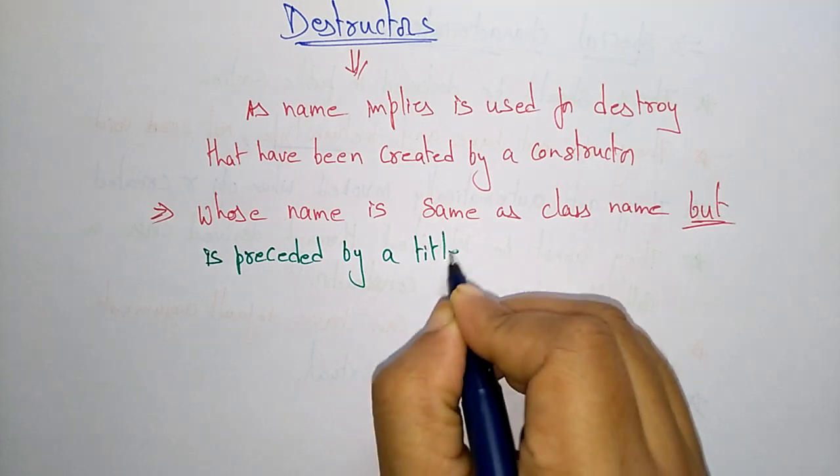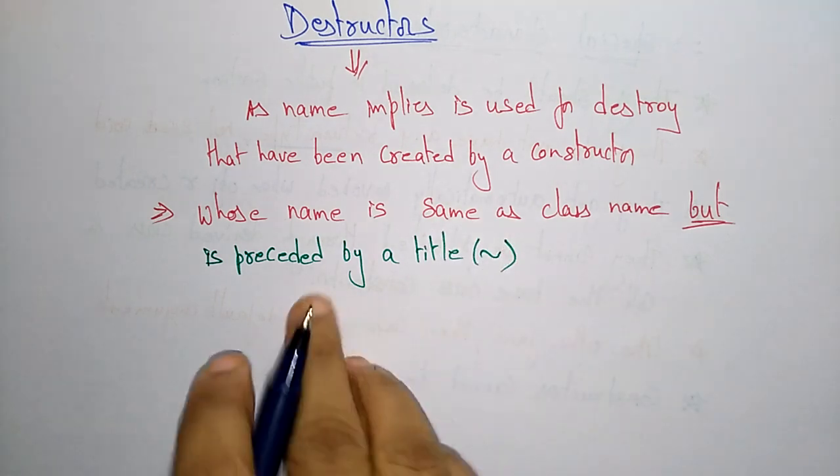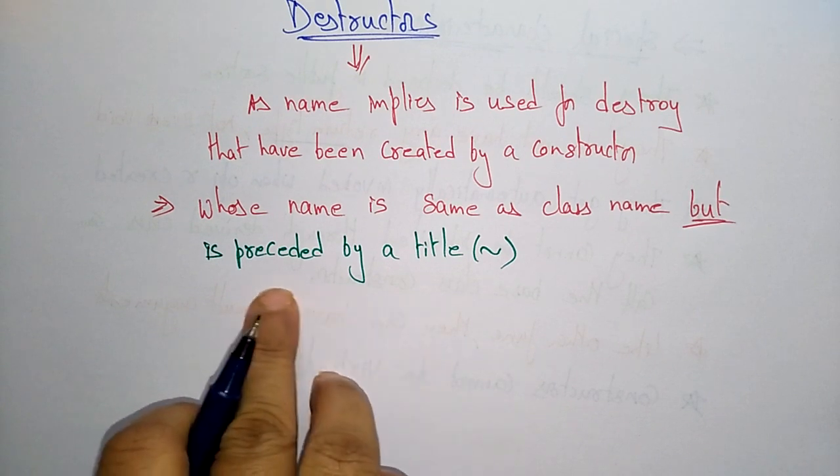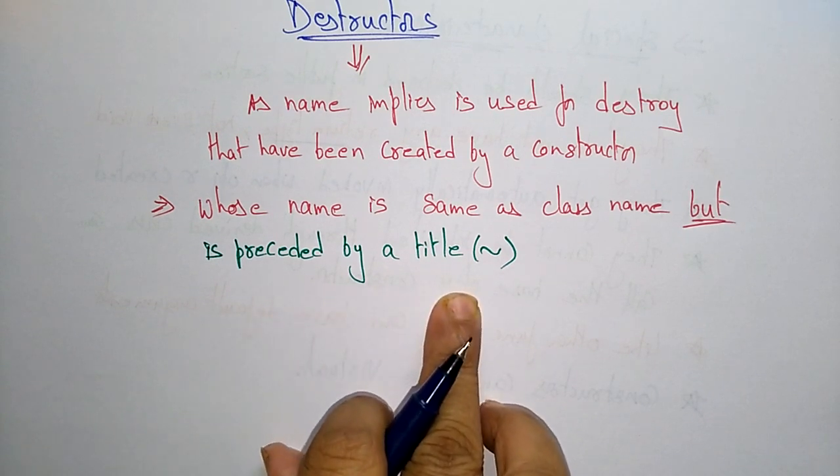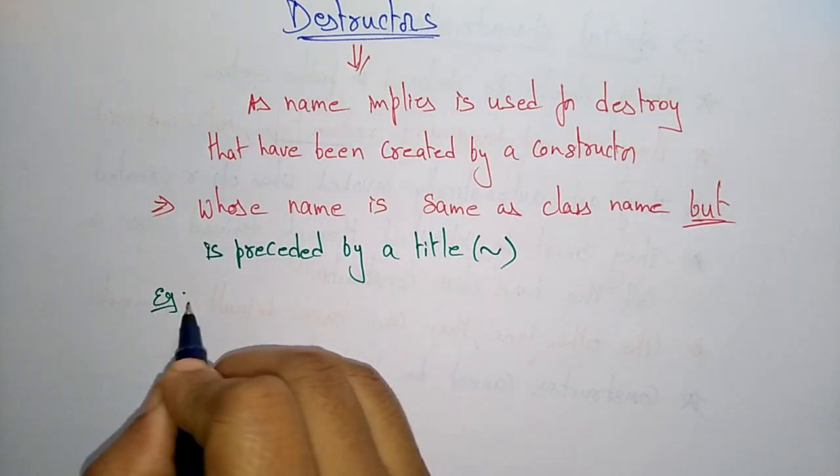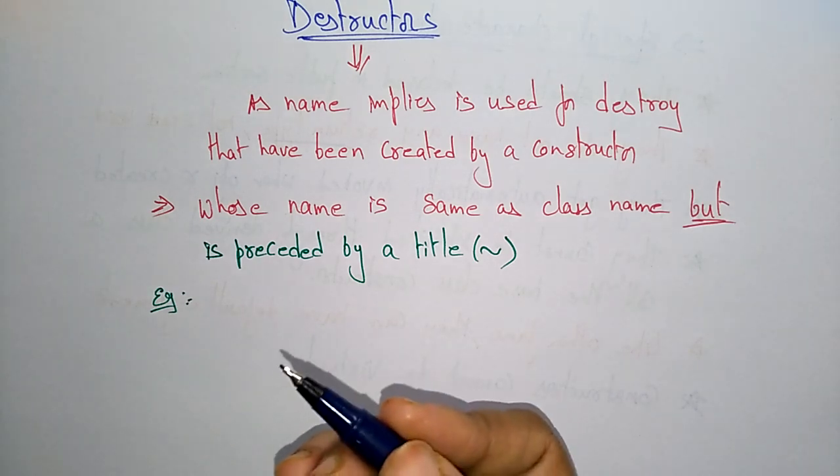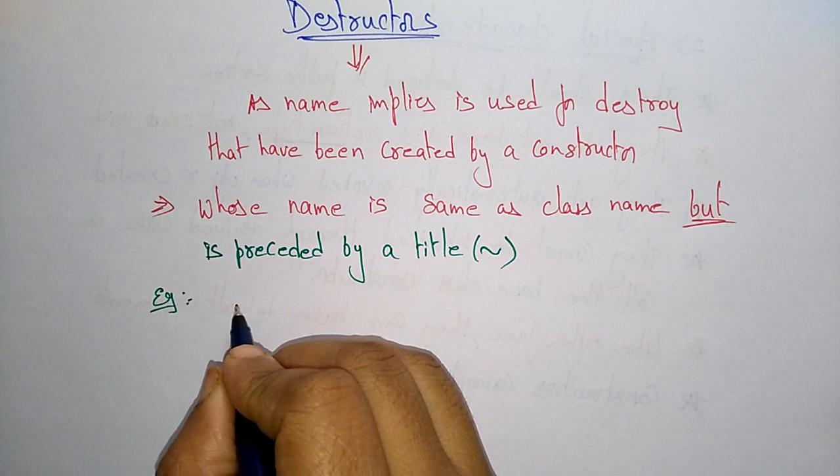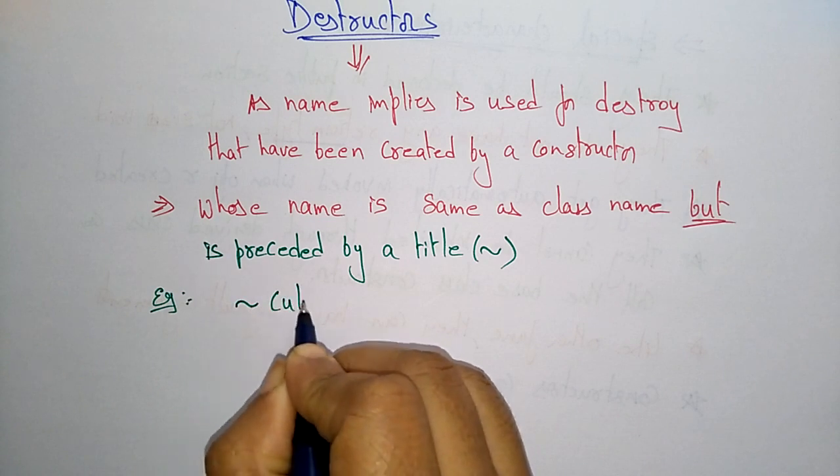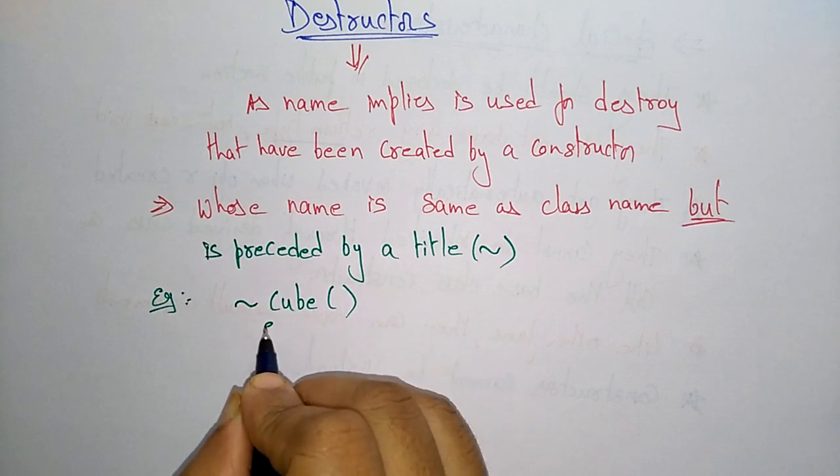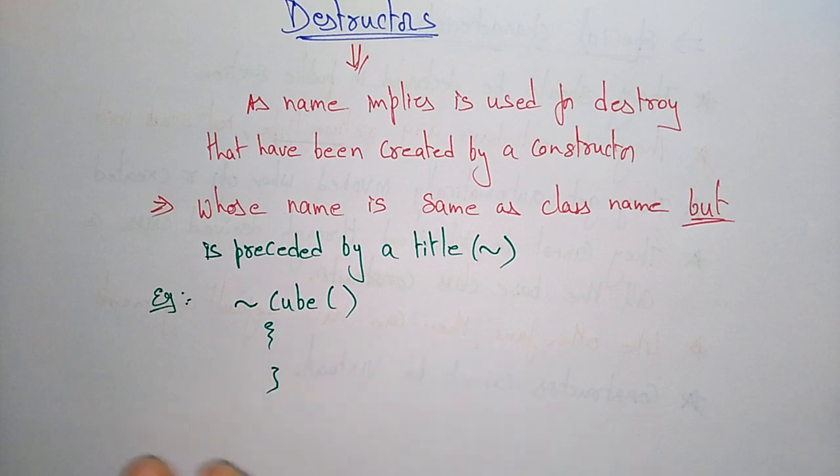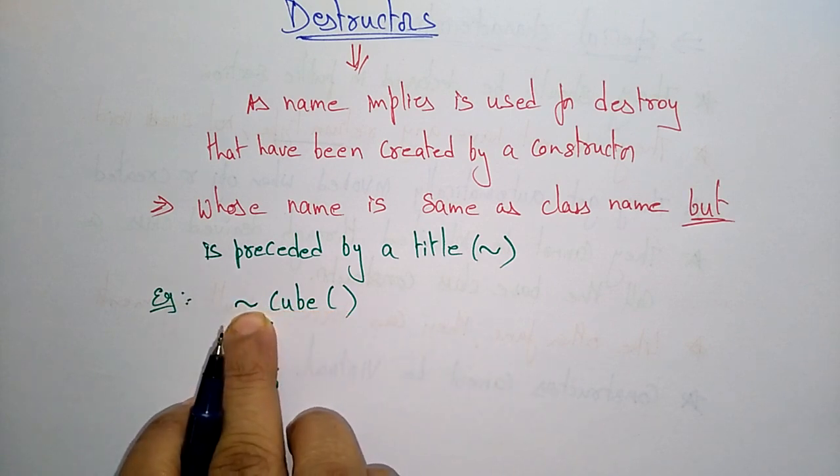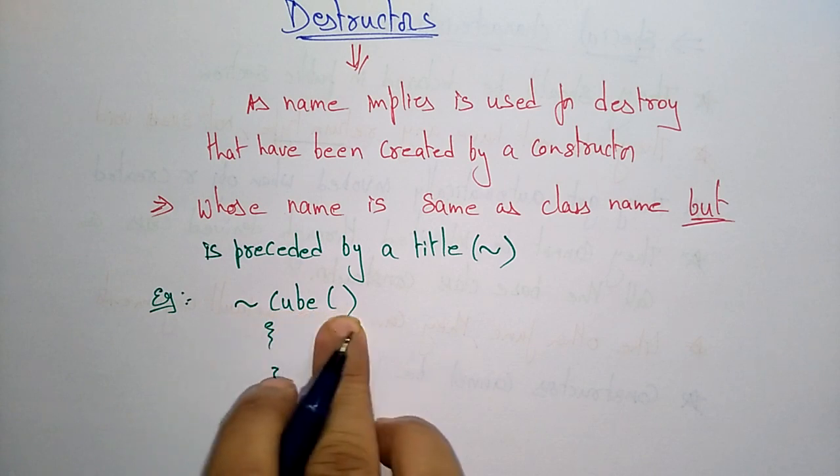The destructor name is same as the class name but with preceded by a tilde. See the example here: suppose cube is the constructor name or the class name, just after that cube, and write the instructions whatever you want. So this is the syntax of the destructor with tilde.